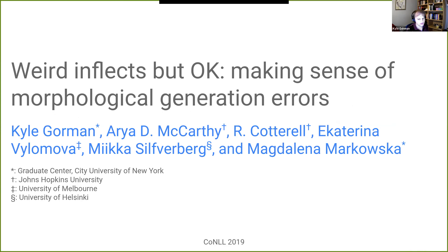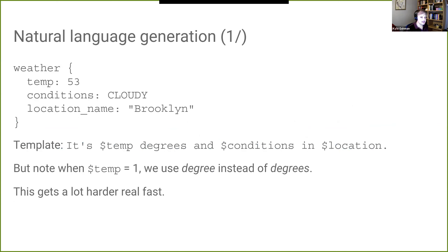I want to talk about some collaborative work I did with a team including our host, in which we tried to understand what's going on in errors in a massively multilingual shared task. Imagine I'm building a system for natural language generation — perhaps a system that reads the weather out. This is a common request in less resourced languages. A system that can read dates and times is considered really useful. The template is something like: 'It's temperature degrees and conditions in location,' so I can say 'It's 53 degrees and cloudy in Brooklyn.'